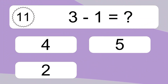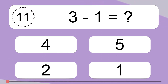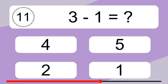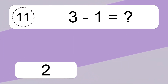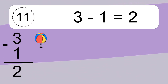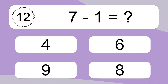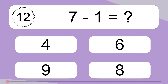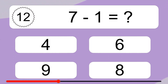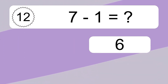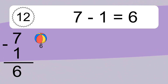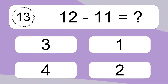3 minus 1 equals what? 3 minus 1 equals 2. Let's count it. 7 minus 1 equals what? 7 minus 1 equals 6. Let's count it: 6.